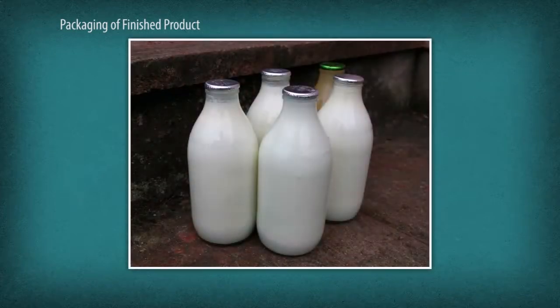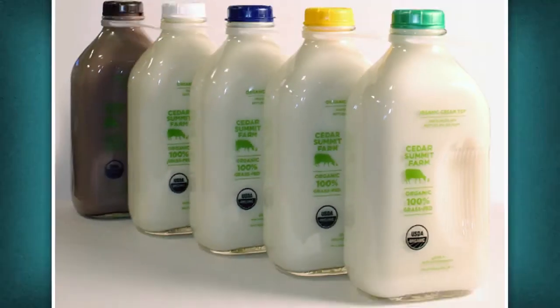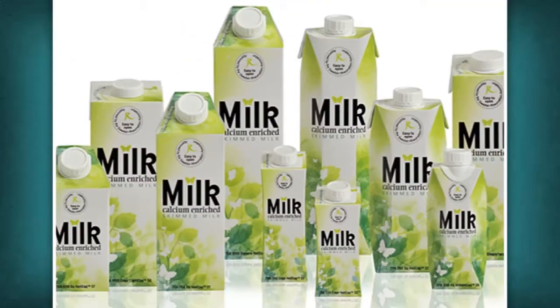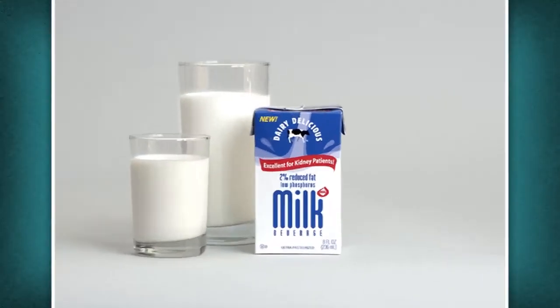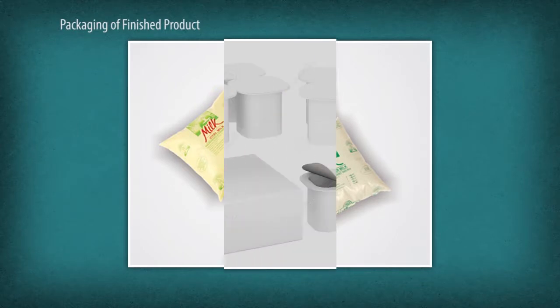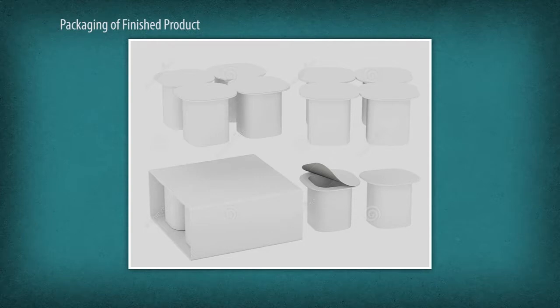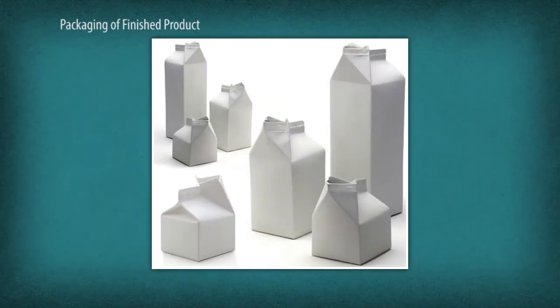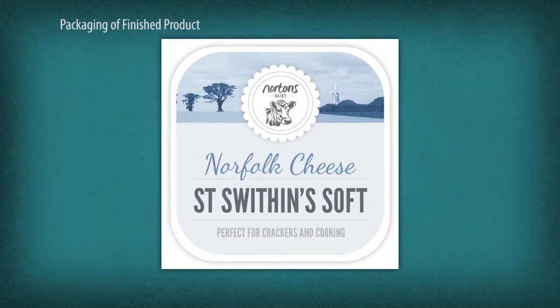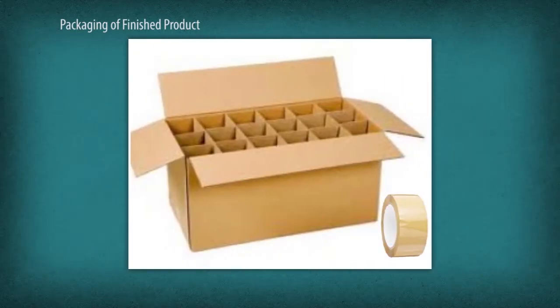The packaging of dairy products is very important to preserve their nutritive values. The challenge to the packaging industry is to deliver nutritious milk to the consumer in the most economical, hygienic, safe and environmentally friendly package. Hence, it is important to choose the right packaging material. Some of the commonly used packaging materials in the dairy industry are paper, paperboard and corrugated fiber board.